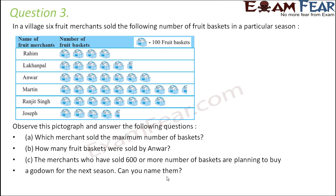Question number 3. In a village, six fruit merchants sold the following number of fruit baskets in a particular season. Again, we have a pictograph and here it says that each image represents 100 fruit baskets. So each image is 100. Observe the pictograph and answer the following.